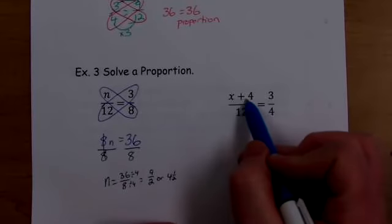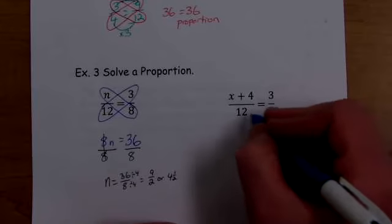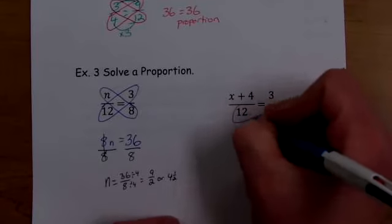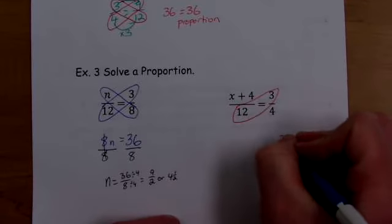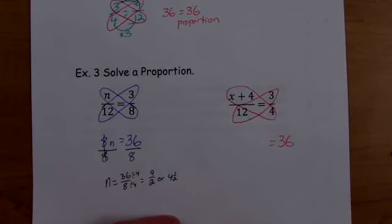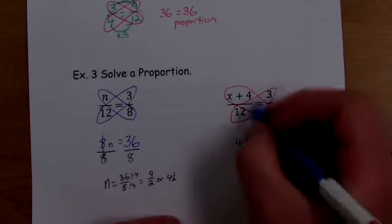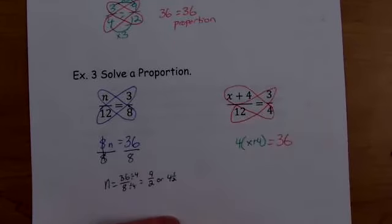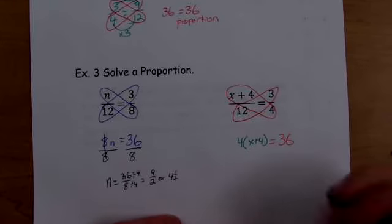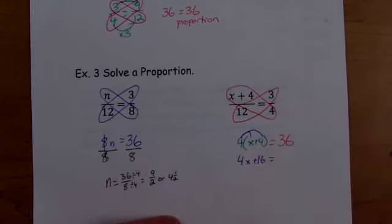Here's another one. x plus four over 12 is the same thing as three fourths. Well, I know that four times three is 12, but three times, blah, I'm confused on this one. We need to use cross products here. So three times 12 is 36. And then we need to do four times x plus four. Well, this would be four times x plus four. The whole thing has to go into parentheses because we're taking four times the whole thing. Look what we have here. Distribution. Distribute four through.